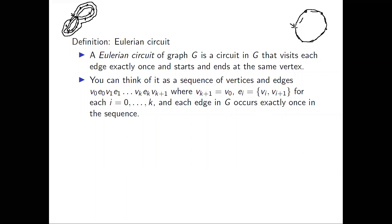These Eulerian circuits can be thought of as sequences of vertices and edges. You can write the sequence as v0, e0, v1, e1, up to vk, ek, and then vk+1, where vk+1 equals v0 — so the sequence starts and ends with the same vertex. For each i, the edge ei consists of vertices vi and vi+1, and the requirement is that each edge in the graph occurs exactly once in this sequence.